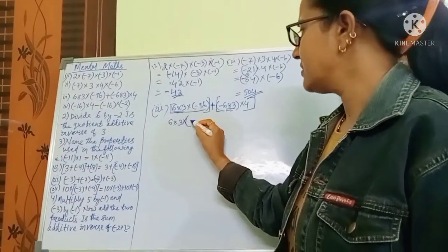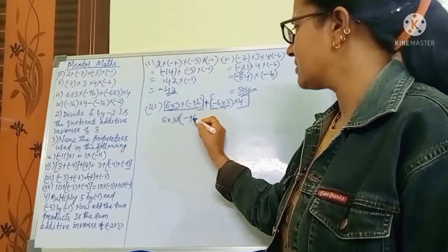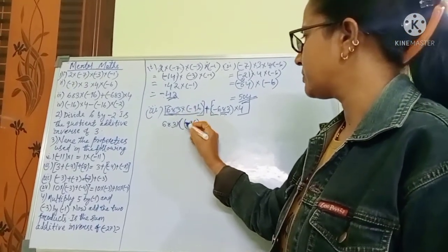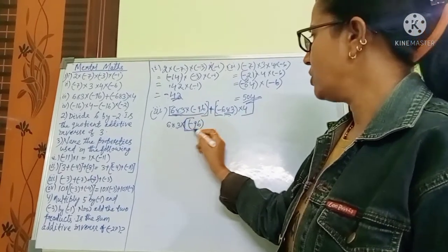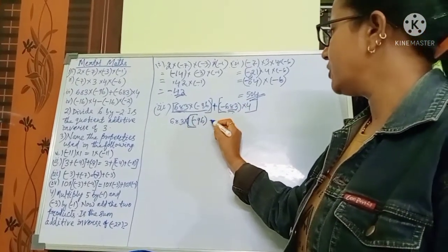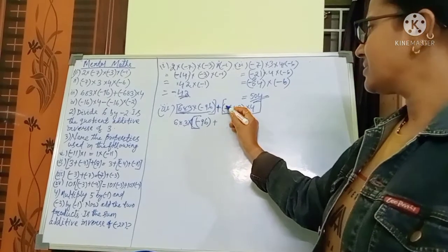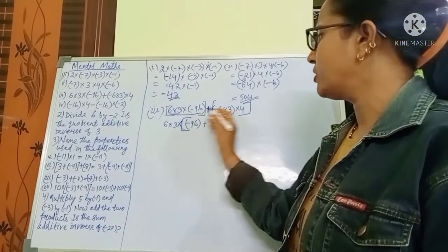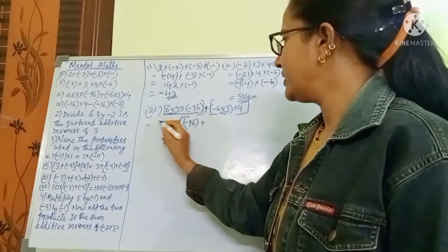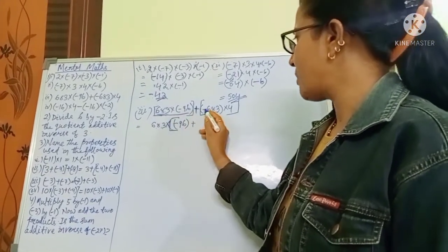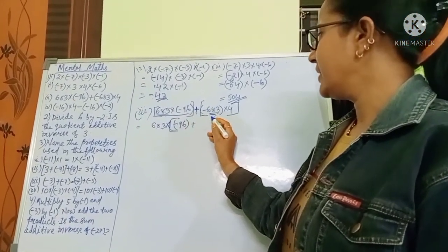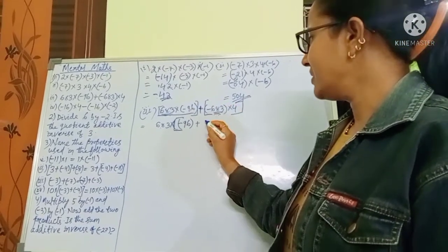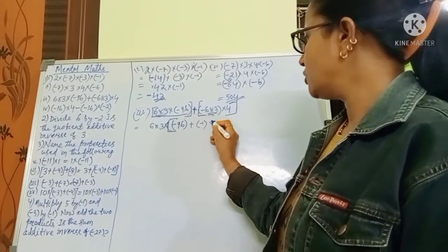Minus 96 comes from the first part. From the second part, plus — because this minus sign it has remained here. I have taken only the positive part. So minus is already there, and minus 1 is left, multiplied by 4.